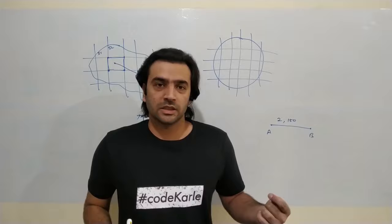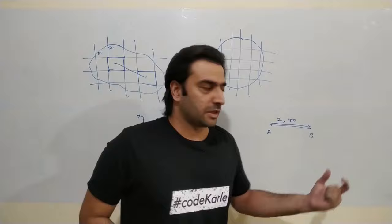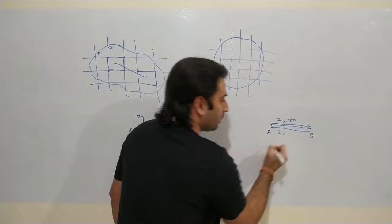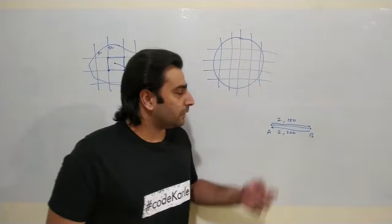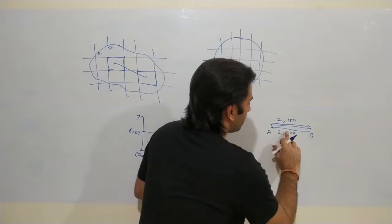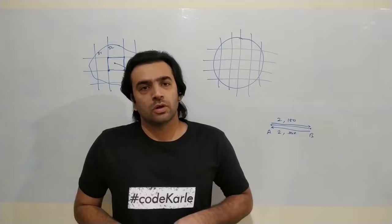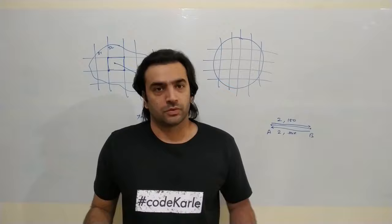Even though a road looks non-directional, it is actually a directed relationship. There is one road from A to B which is 2 kilometers, taking 150 seconds; and another road from B to A which is also 2 kilometers but takes 200 seconds. We need a directed relationship to handle different ETA and traffic patterns in each direction, and also to represent one-way roads — if it takes infinite time from B to A, that means it's a one-way road.